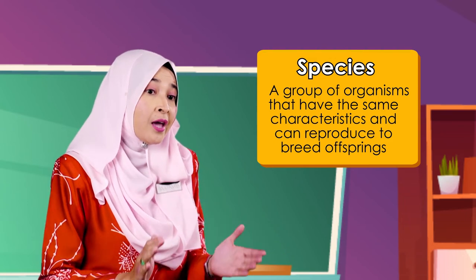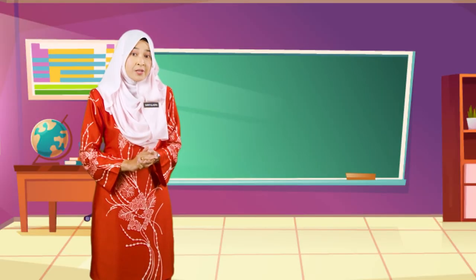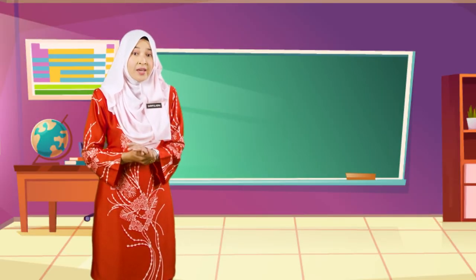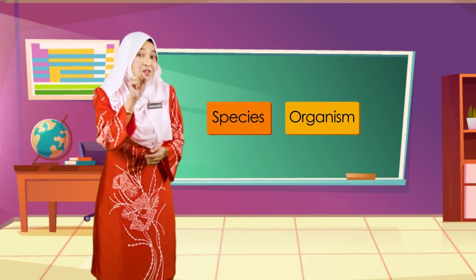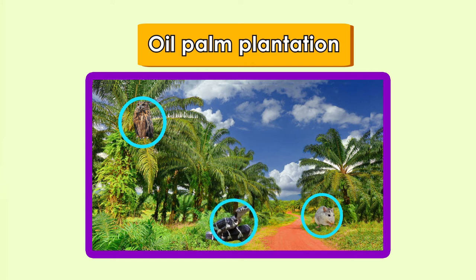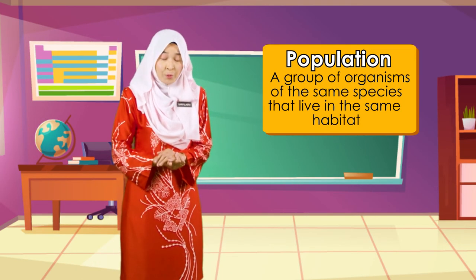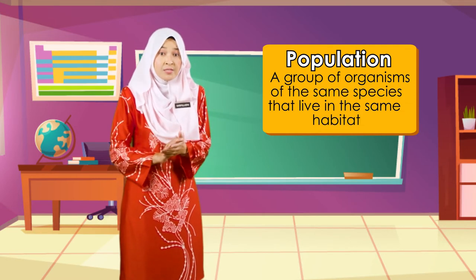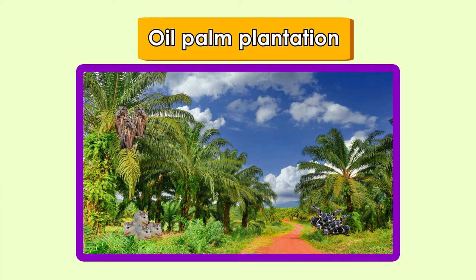There are various groups of organisms with similar characteristics that can reproduce to breed offspring. The first level of biological organization is known as the species, or organism. Examples of species found in an oil palm plantation are the owl, the mouse, the snake, and the oil palm tree. The next level is the population — a group of organisms of the same species living in the same habitat, such as a population of oil palm trees, owls, mice, or snakes.